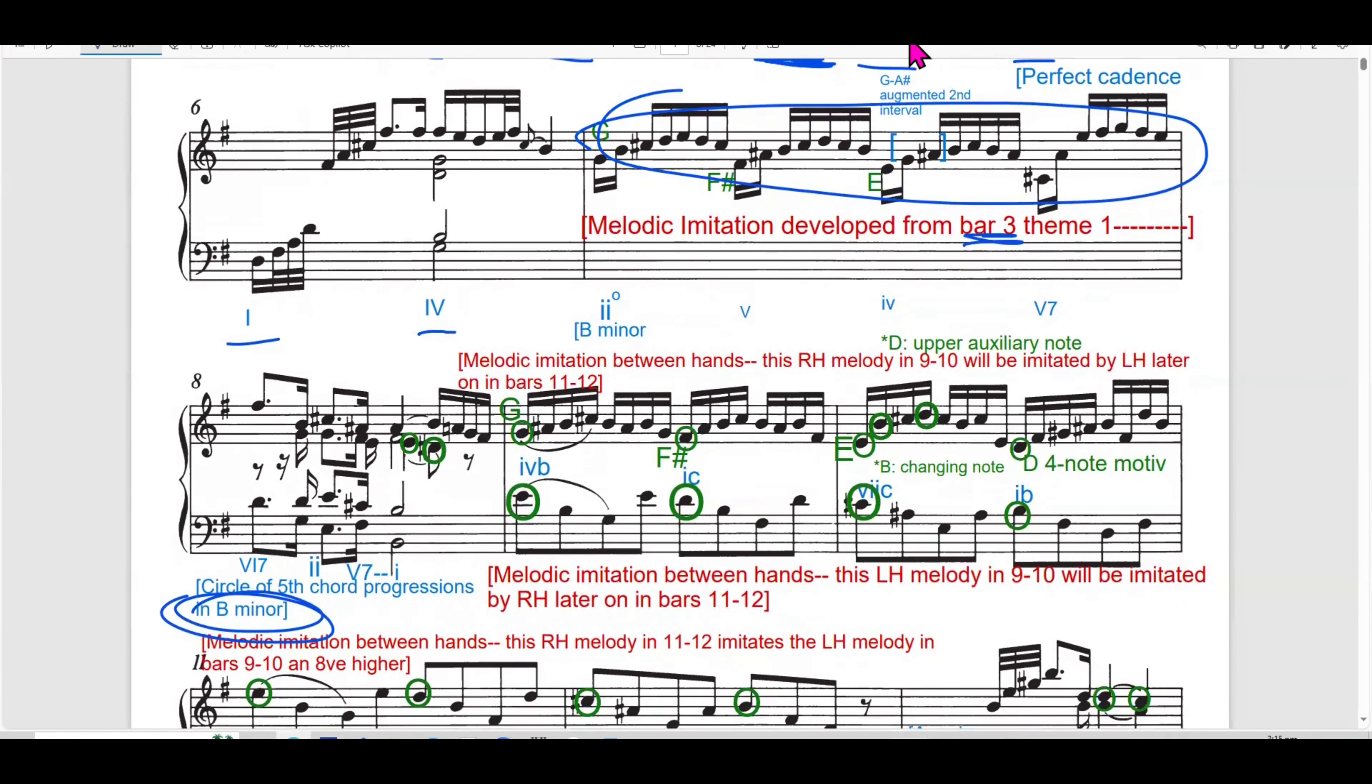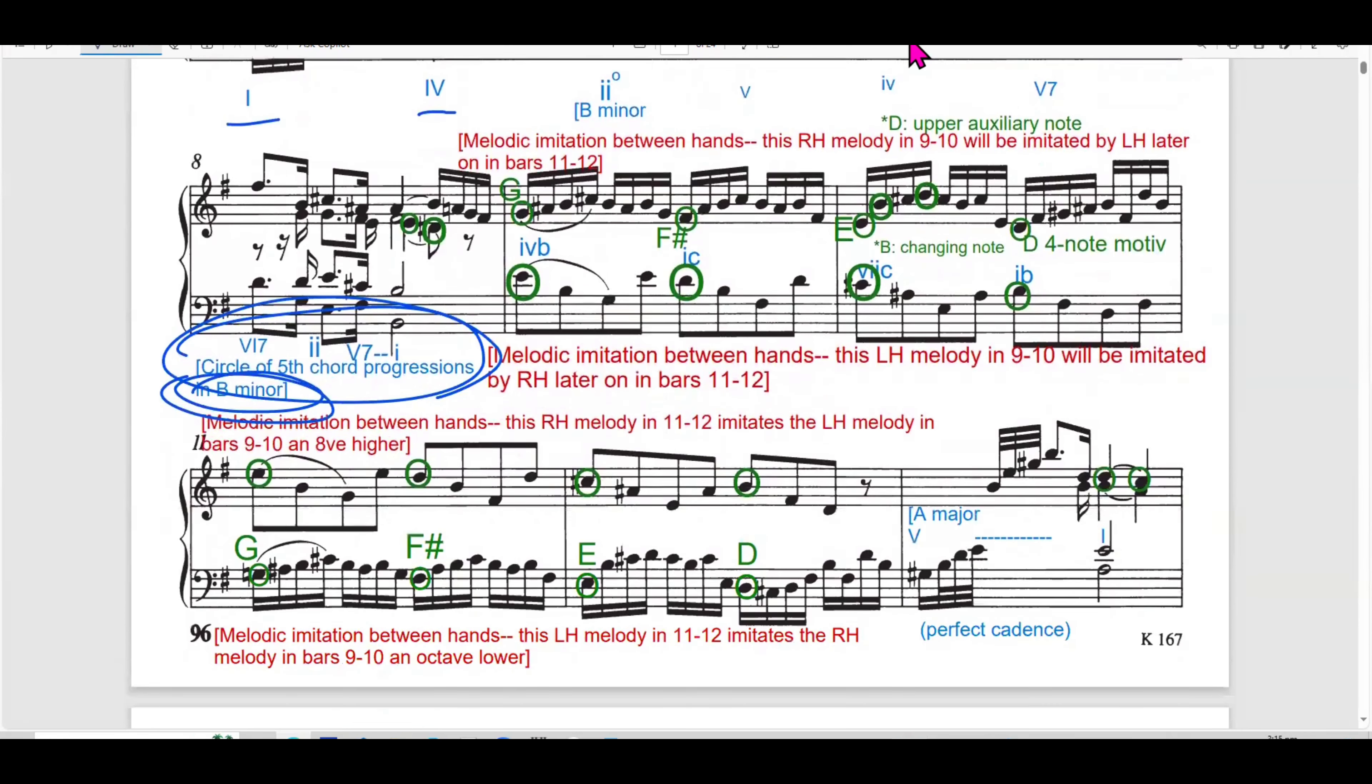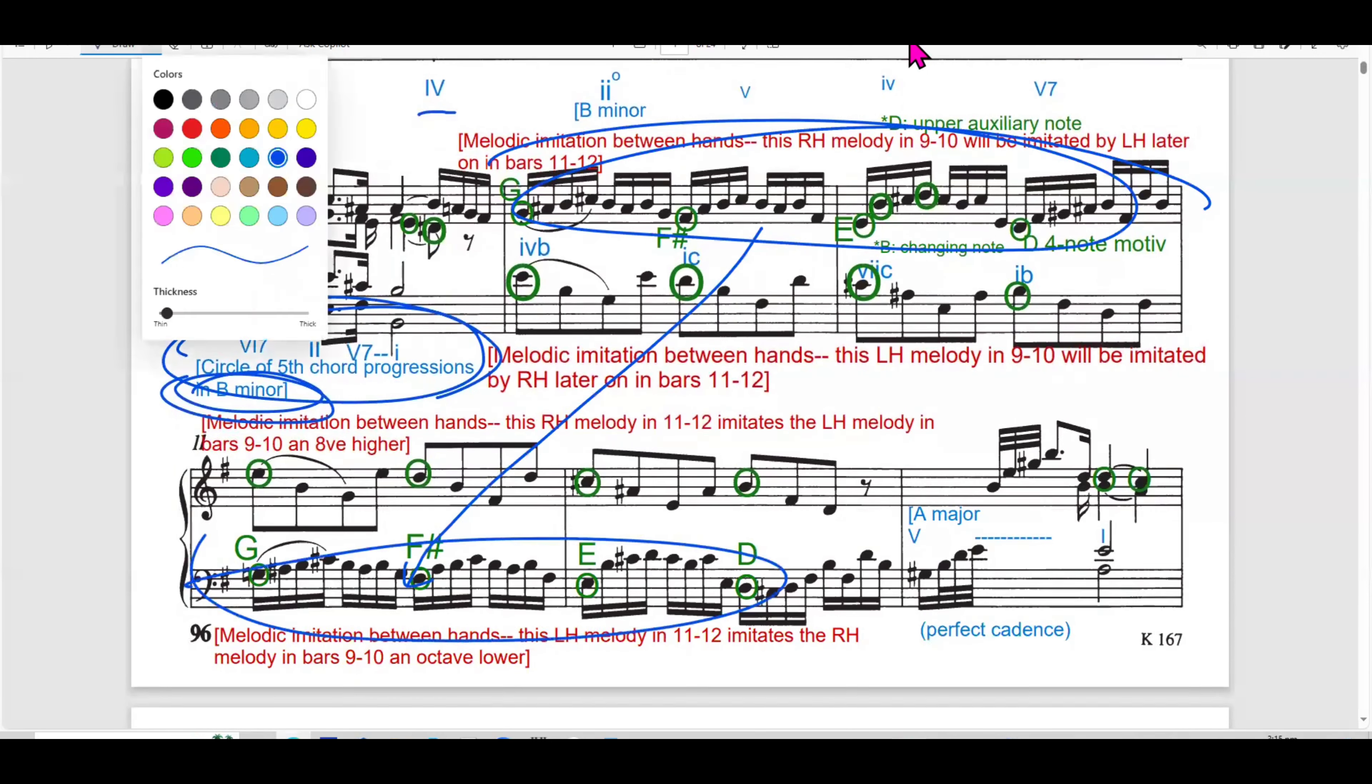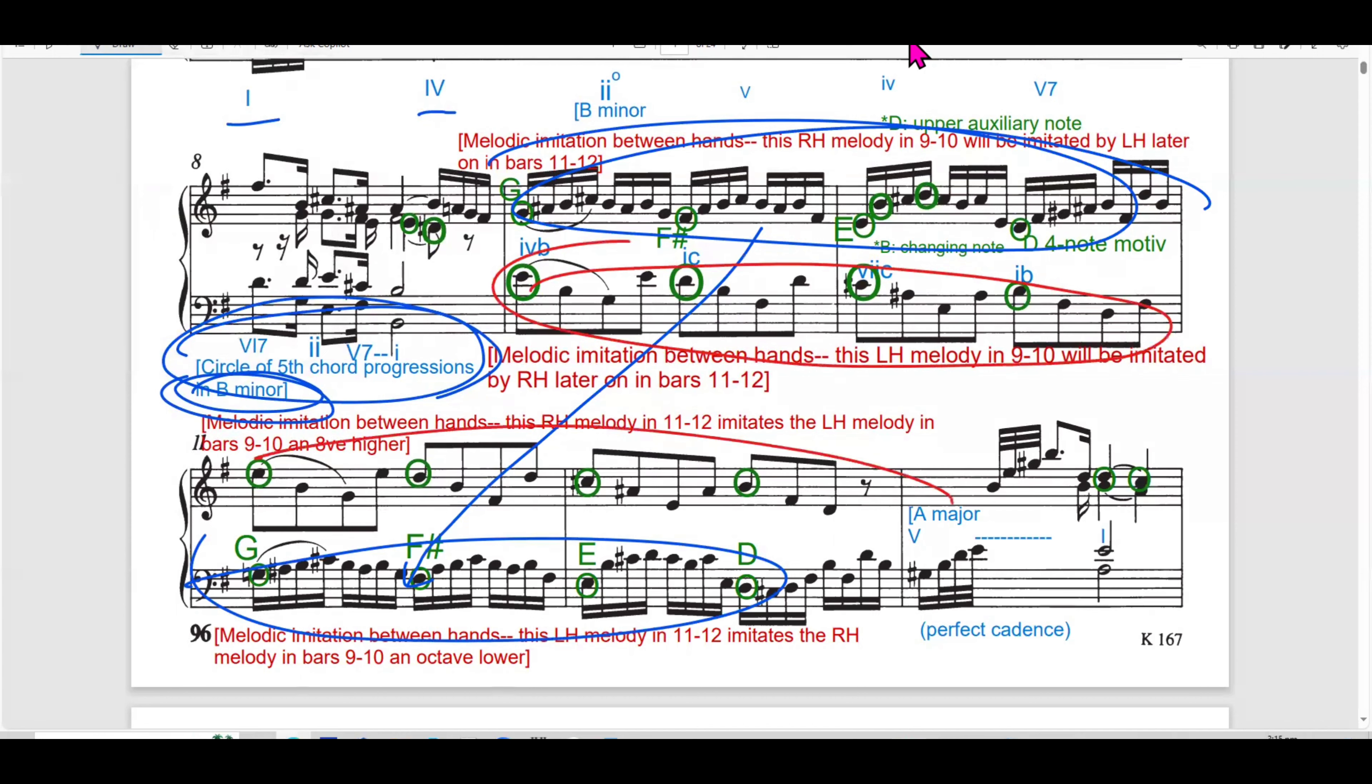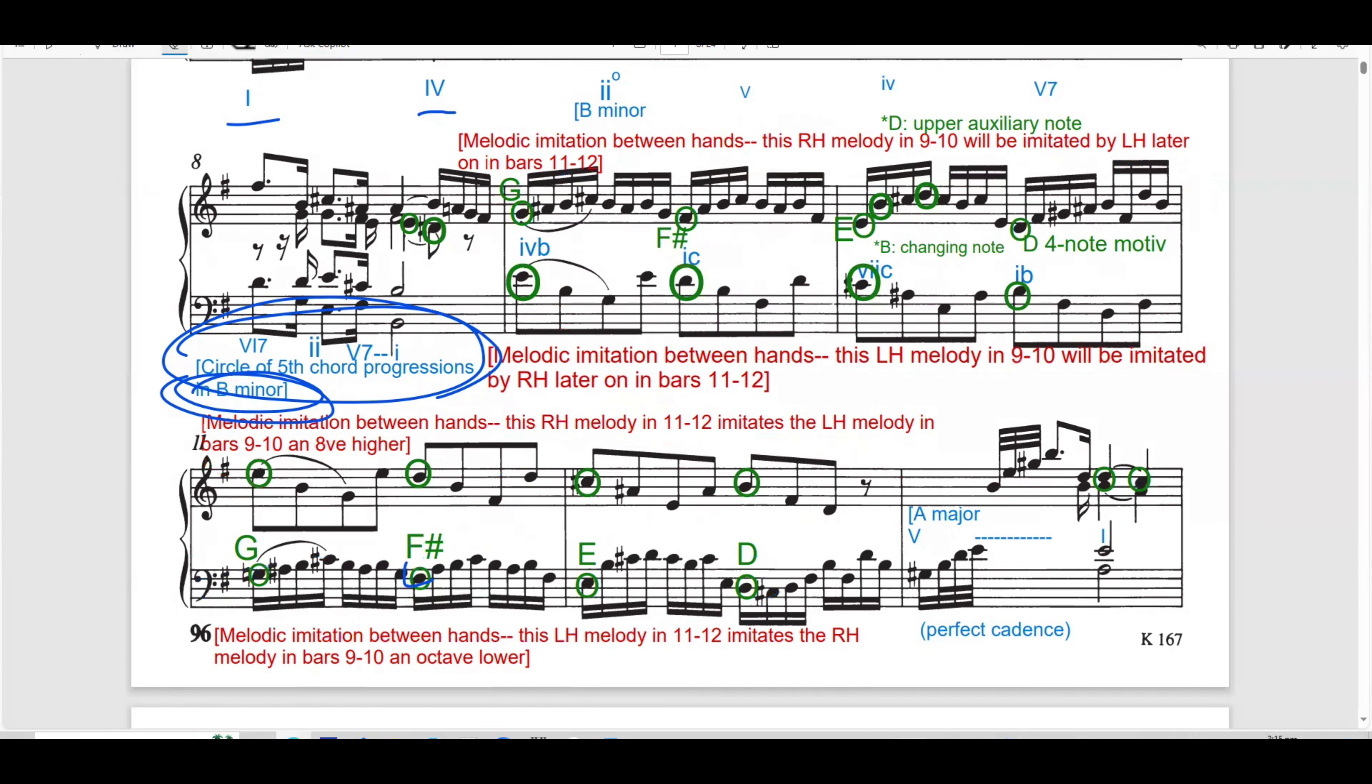And in bar 8 to 9, it contains a circle of 5 progression in B minor, which I mentioned just now. And in bar 9, the right hand plays a melody that will be imitated by the left hand later on. So, this melody later on will go down to the left hand here. And over here, the left hand, this melody will go to the right hand later on.